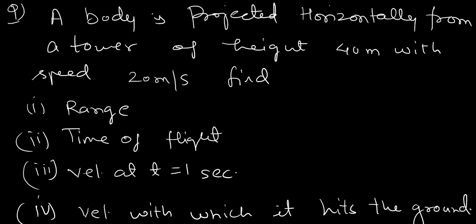Question says, a body is projected horizontally from a tower of height 40 meter with speed 20 meter per second, then find range, time of flight, velocity at t equals to 1 second and velocity with which it hits the ground. Okay, this question will give G value 10 meter per second.